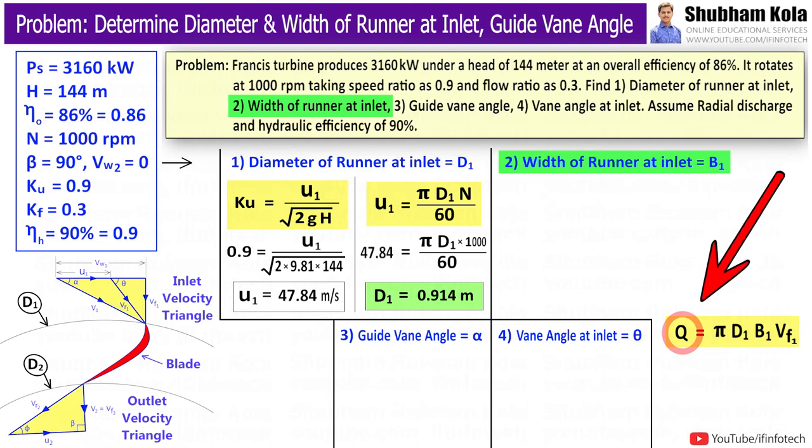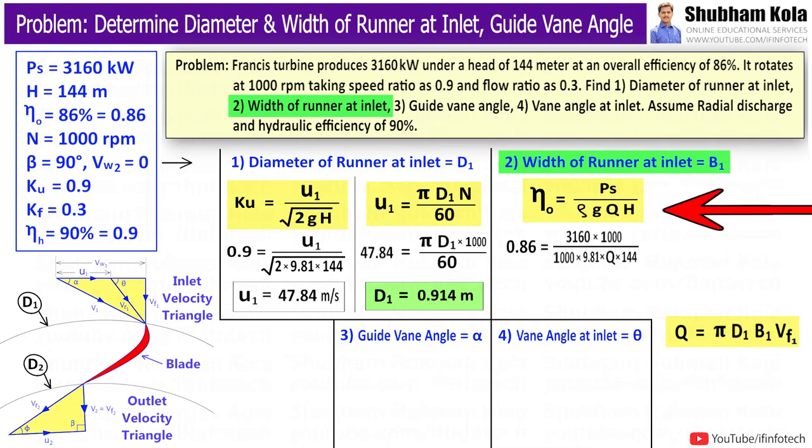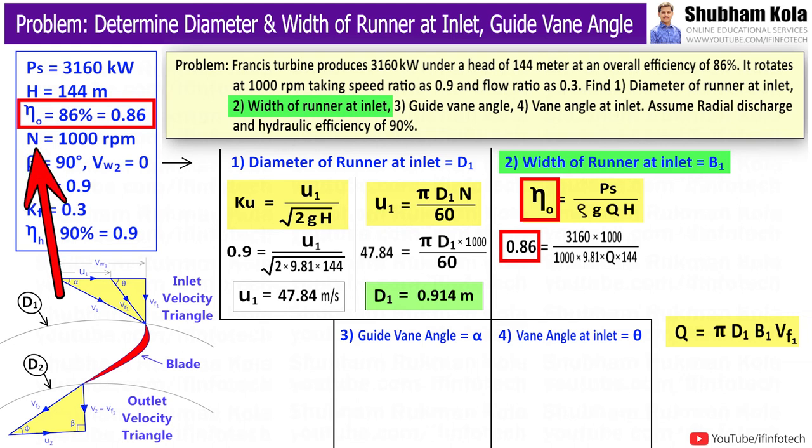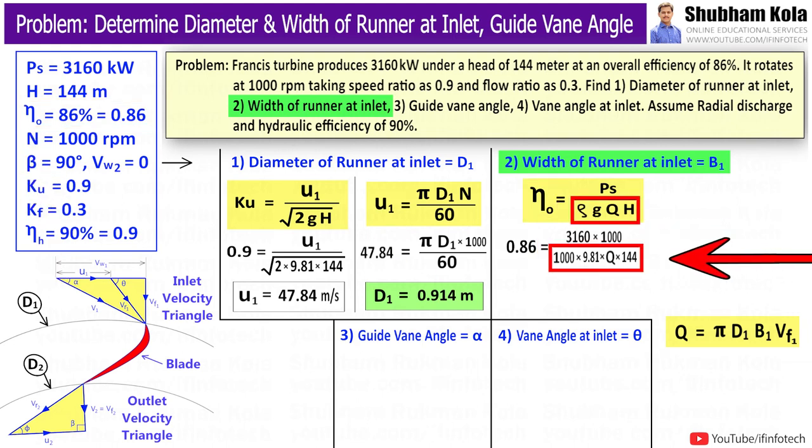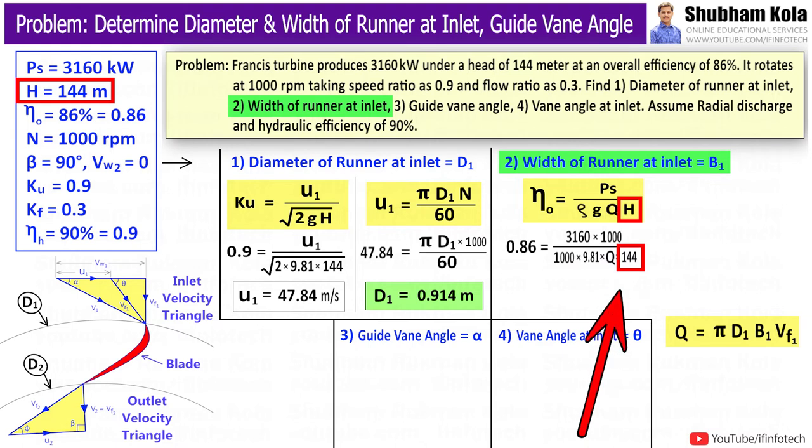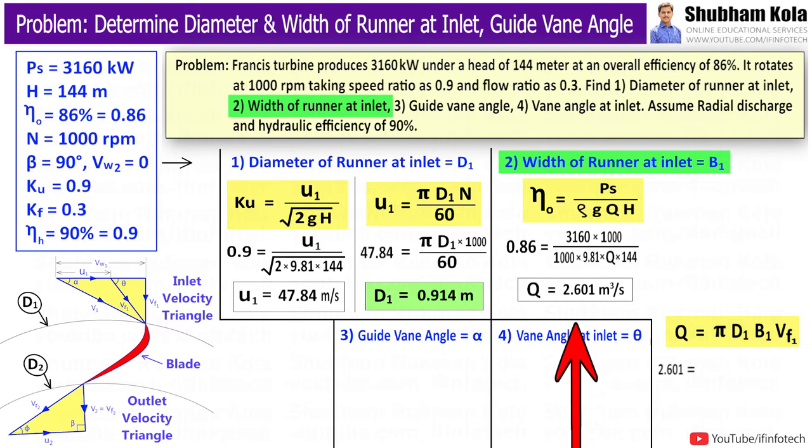To calculate discharge, we will use equation of overall efficiency: η = Ps / (ρgQH), where shaft power is given in question, and overall efficiency also given. Here input power is ρgQH, density of water ρ = 1000, g = 9.81, and net head H = 144 m. So, by calculating this, we will get Q = 2.601 m³/s.